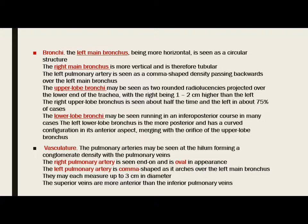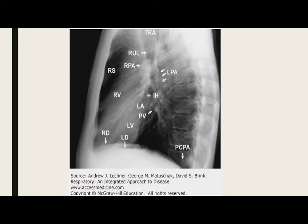The pulmonary arteries may be seen at the hilum forming a conglomerate density with the pulmonary veins. The right pulmonary artery is seen end-on and is oval in appearance, while the left pulmonary artery has a comma shape as it passes over the left main bronchus. The right pulmonary artery is seen as a comma shape and the other is seen as an oval radio-opacity.